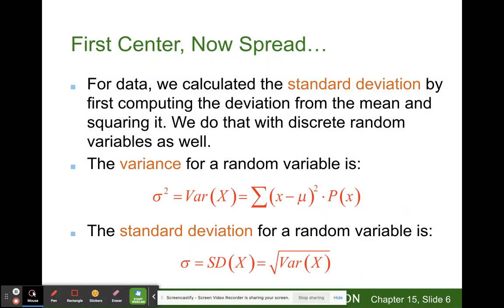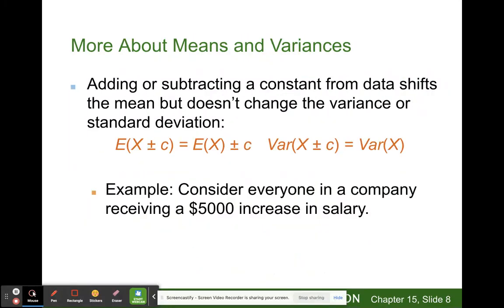The variance of X equals the sum of (x minus mu) squared times the probability of x occurring. The standard deviation is just sigma, which is the square root of the variance of X. Variance is the square of standard deviation. Adding or subtracting a constant from data shifts the mean but doesn't change the variance or standard deviation.